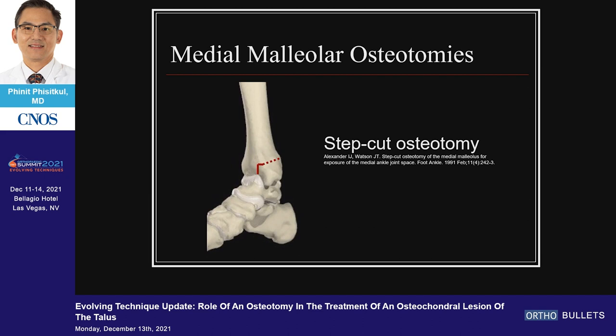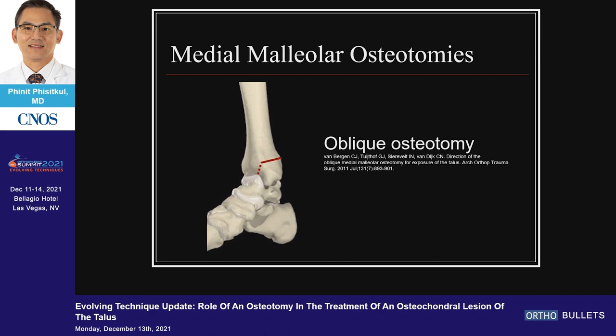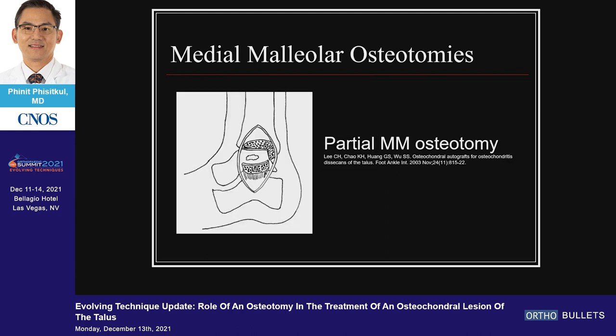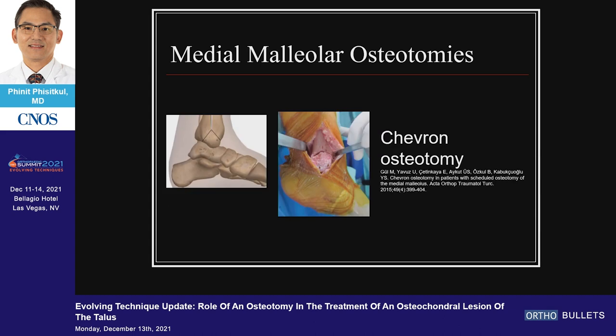Step cut osteotomy — make a chair-front cut from the front. Or you can do a modified step cut, or an oblique osteotomy, which Dr. Furco mentioned, and this is my go-to surgery from the medial side. You can do a partial medial malleolar osteotomy, taking out the front part, or an inverted osteotomy, depending on where you can locate the lesion.